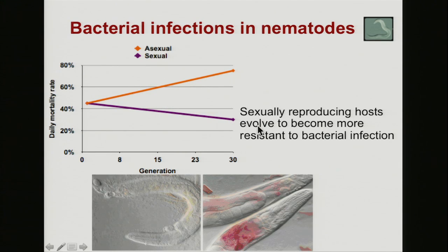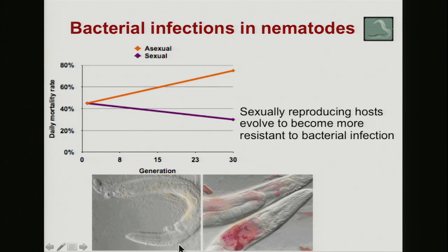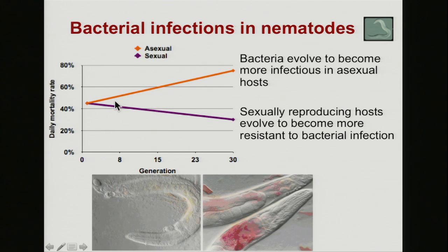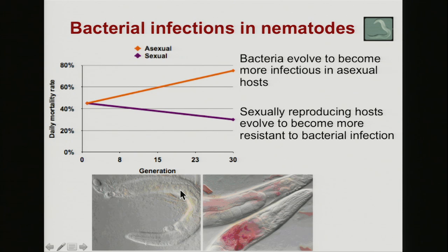Sexually reproducing hosts evolve and become more resistant to bacterial infection. When we allow these things to coexist generation after generation with always sexual reproduction, the mortality rate they suffer from bacterial infection declines from about 45% down to about 25% over 30 generations. On the other hand, if nematodes are enticed in the laboratory to only reproduce asexually, the bacteria get better and better at infecting that host because the host genome doesn't change. So if there's not a moving target for the bacteria to track, they get better at making the nematodes sick. If the host reproduces sexually, its genetics are changing every generation — it's a moving target — and it's able to escape the most harmful effects of infection.